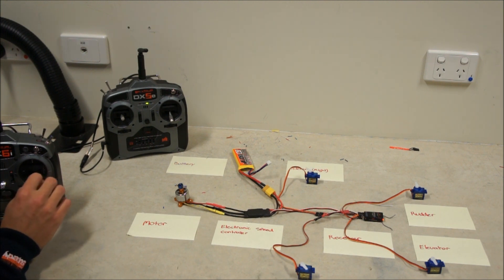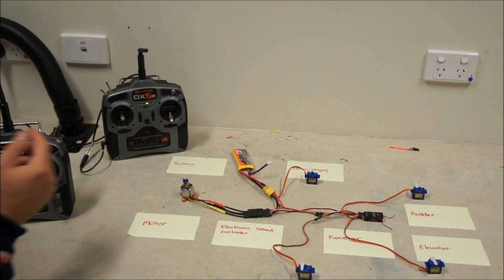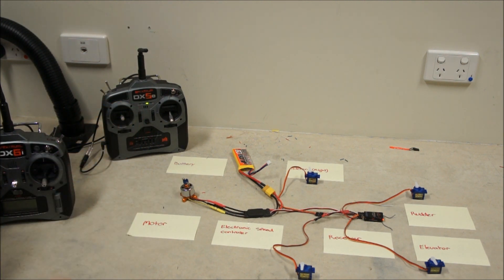So there we go, my ailerons left and right, throttle and elevator, rudder all working. And you need to make sure that you've got exactly the same setup between the two and the reversings all the same as well.